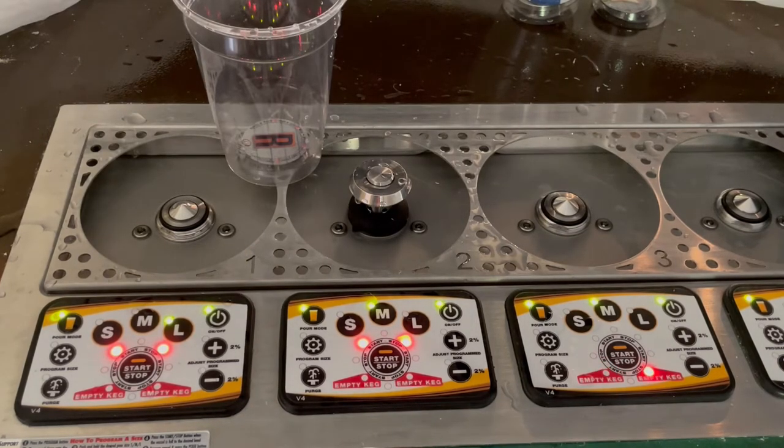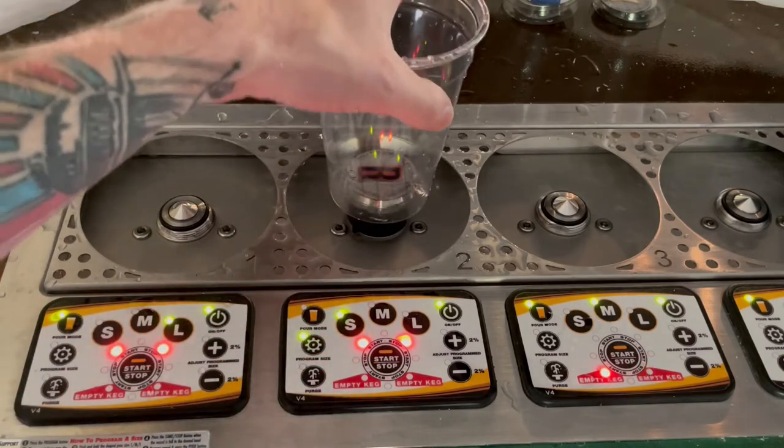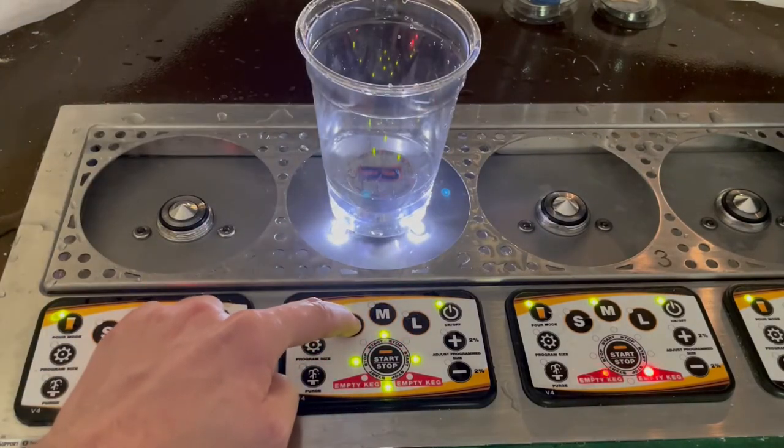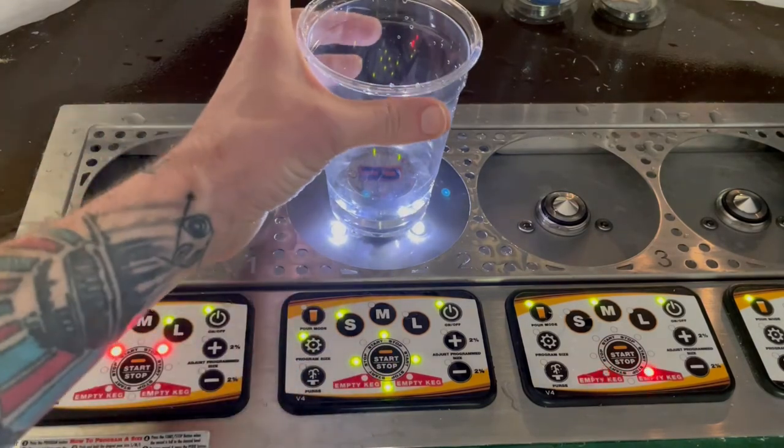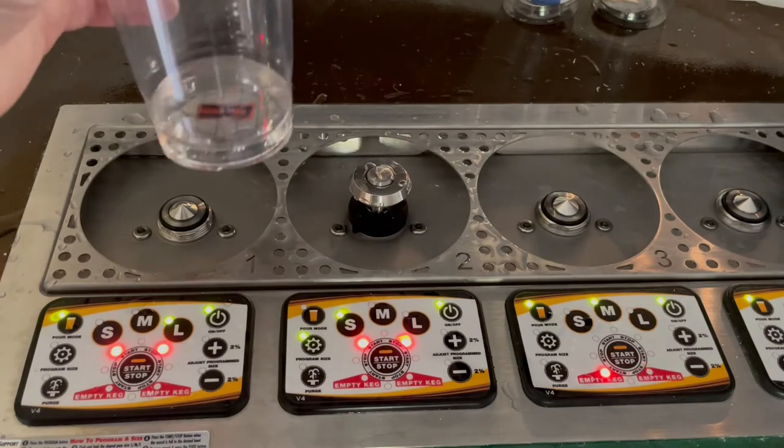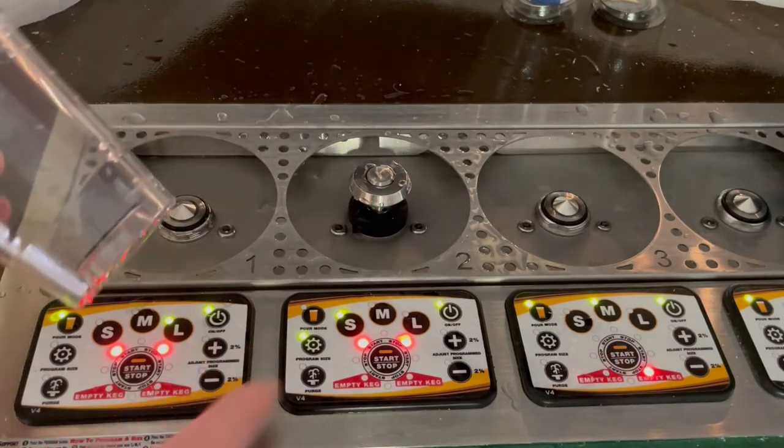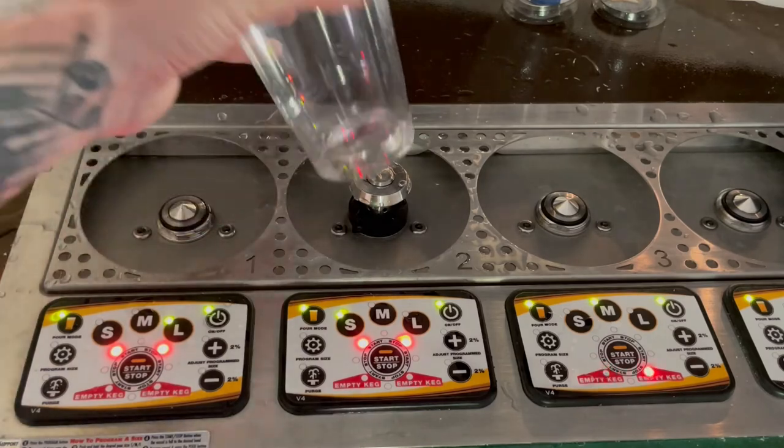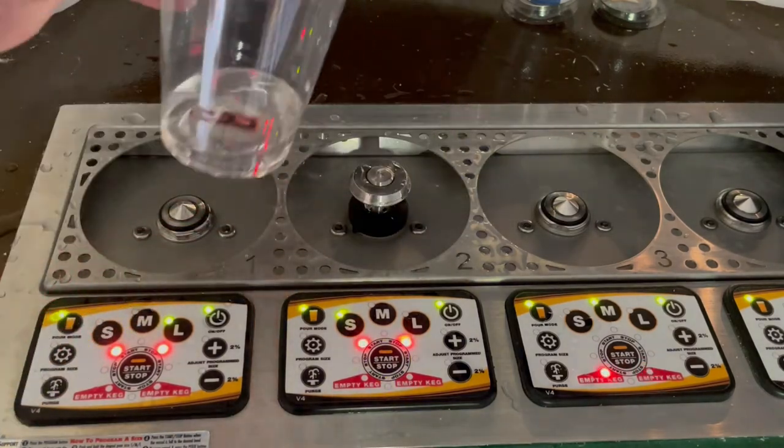Some people like to program on the small side just an ounce or two. People want to do samples like that. So we held the small button for a couple of seconds until liquid came out. Press start. So now if someone wants to try a sample of something, they have just a little splash to work with.